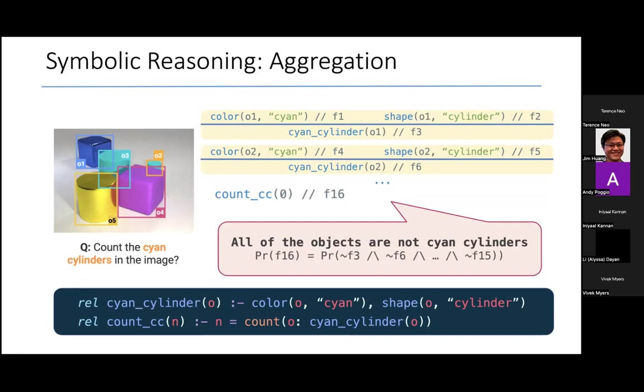In this case, we have every possibility from a count of zero, in which case none of these five objects is a cyan cylinder, to the case where all of these objects are cyan cylinders, for a count of five.